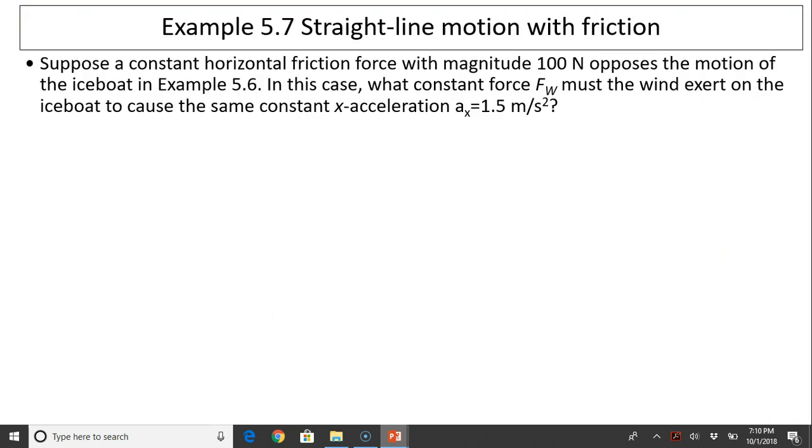Next example, straight line motion with friction. Suppose a constant horizontal friction force with magnitude of 100 newtons opposes the motion of the ice boat in the last example. In this case, what constant force must the wind exert on the ice boat with the same constant x acceleration? Free body diagram: you have normal force and gravity, the force from the wind. This time you have a friction force opposite of your force from the wind.